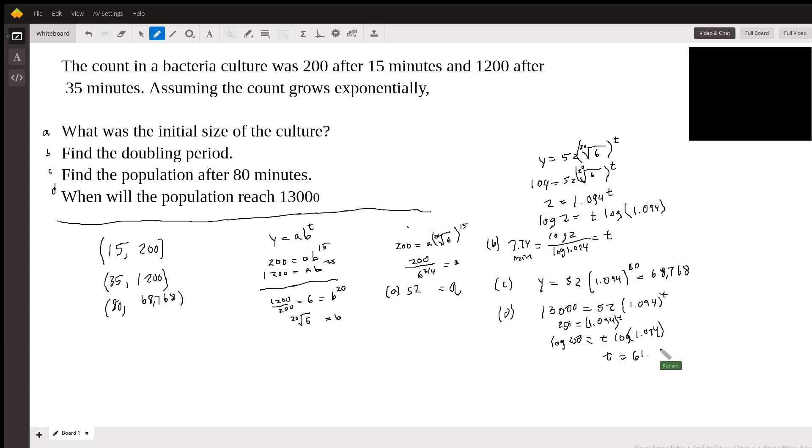Well, yeah, 61.5, say, minutes. This is another data point in here. If you just think of the X, Y table for this function. So 61.5, 13,000. And that seems reasonable also.